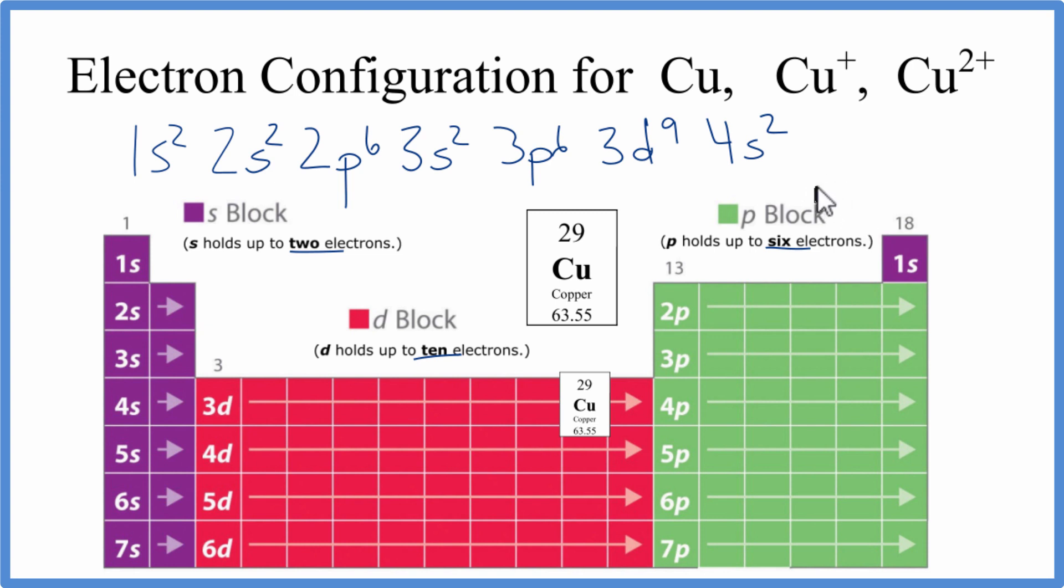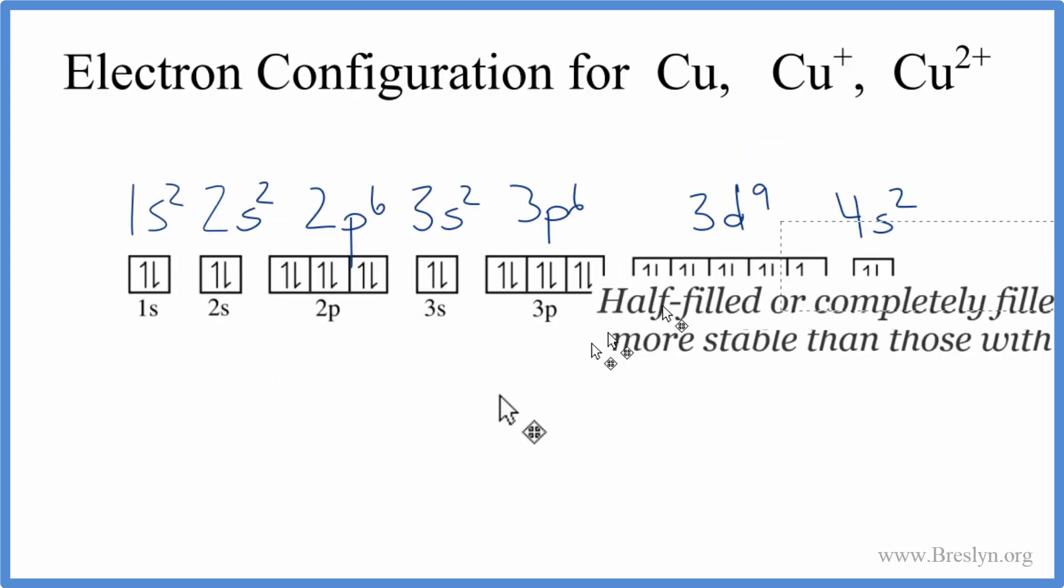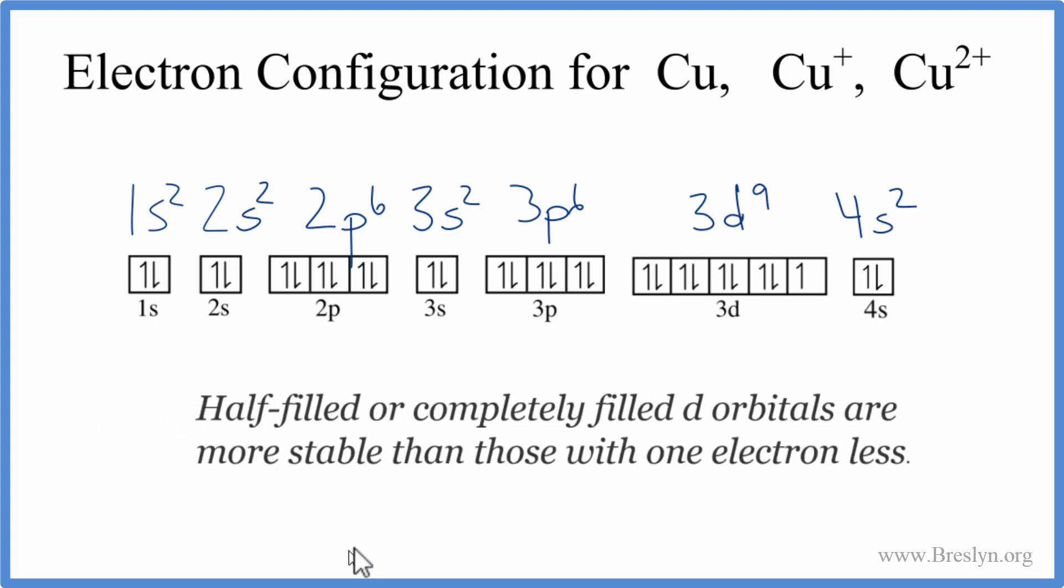And to do that, let's look at the individual electrons in their orbitals. So to write the correct electron configuration for copper, we need to know this rule here. And that's that half-filled orbitals, these d orbitals, or completely filled d orbitals, are more stable than those with one electron less.